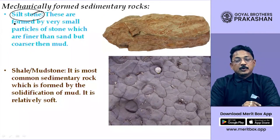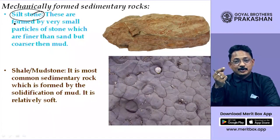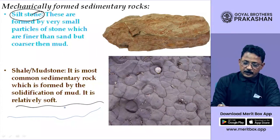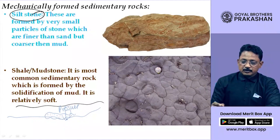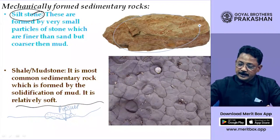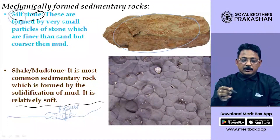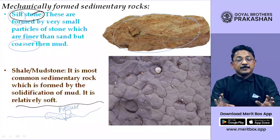Siltstone — silt is the material brought by the river, basically sand and soil. In the bottom of the river this sand and soil gets collected, and the pressure of water is exerted on this silt. The silt gets stuck to one another, forming a rock called siltstone. These are coarser and rough to the touch compared to mud, but comparatively soft types of rocks.